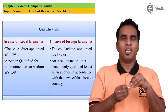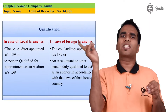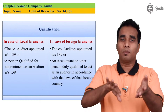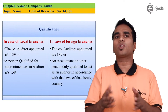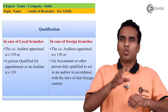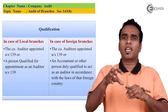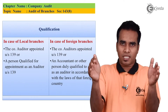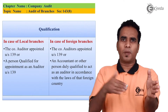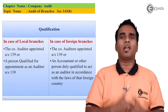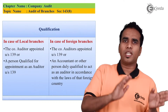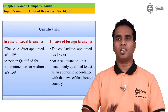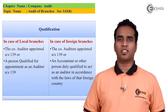The question is: can the same chartered accountant who audits the head office also audit the branch? Normally, companies appoint branch-wise auditors. If branches are in India, the company's main auditor can audit the branch, or any other practicing chartered accountant.